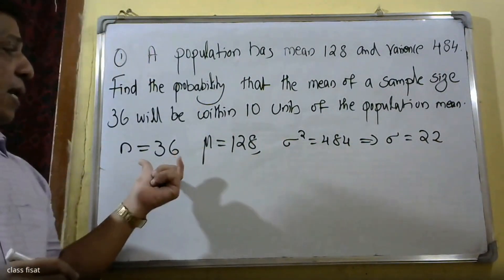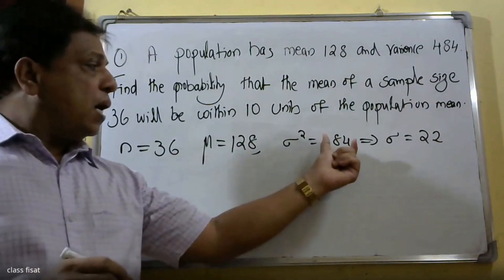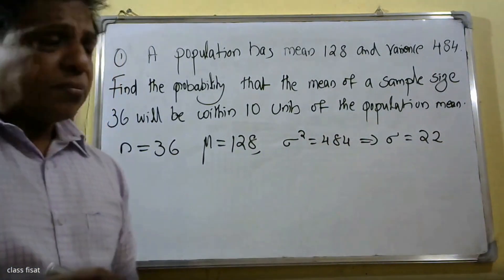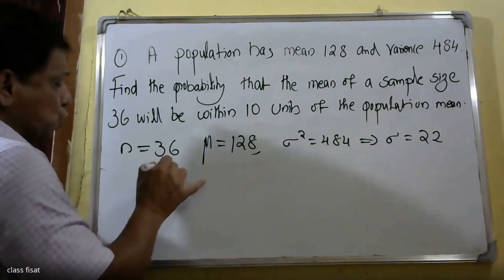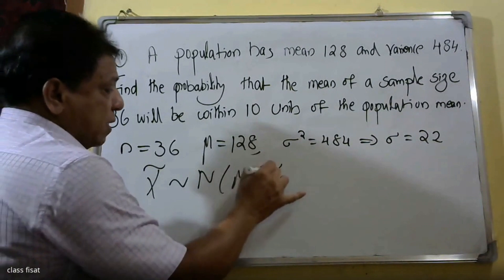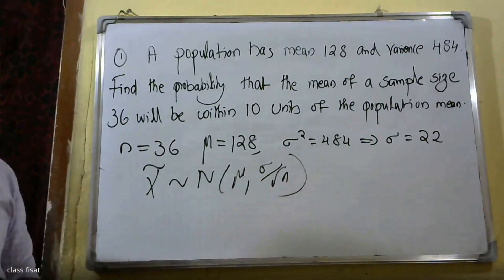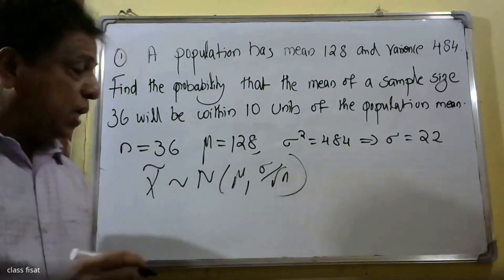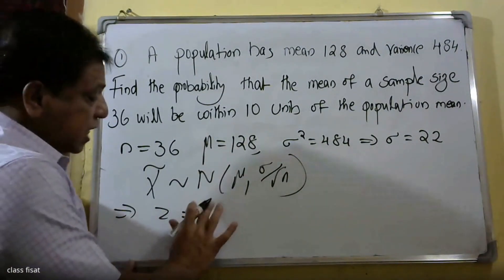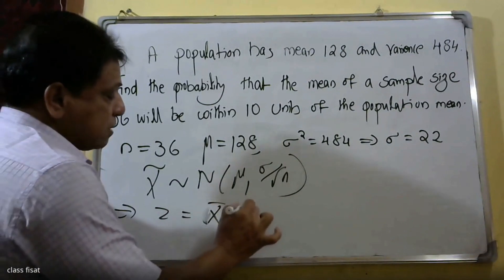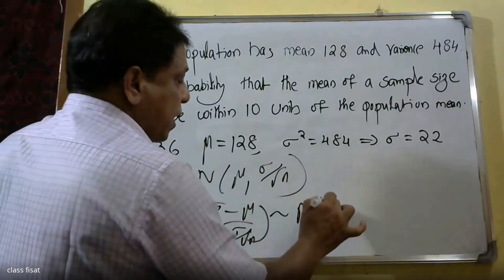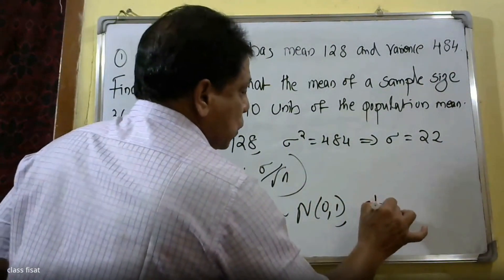The standard deviation is used here. x̄ follows a normal distribution N(mu, sigma/root n). Therefore, z is equal to (x̄ minus mu) divided by (sigma by root n), which follows the standard normal distribution N(0, 1).